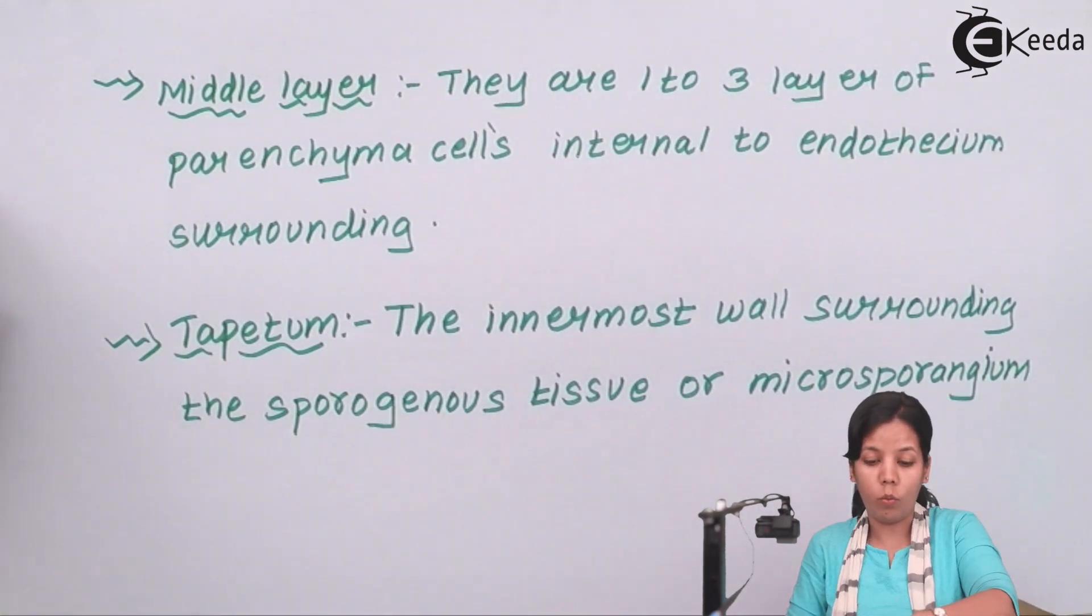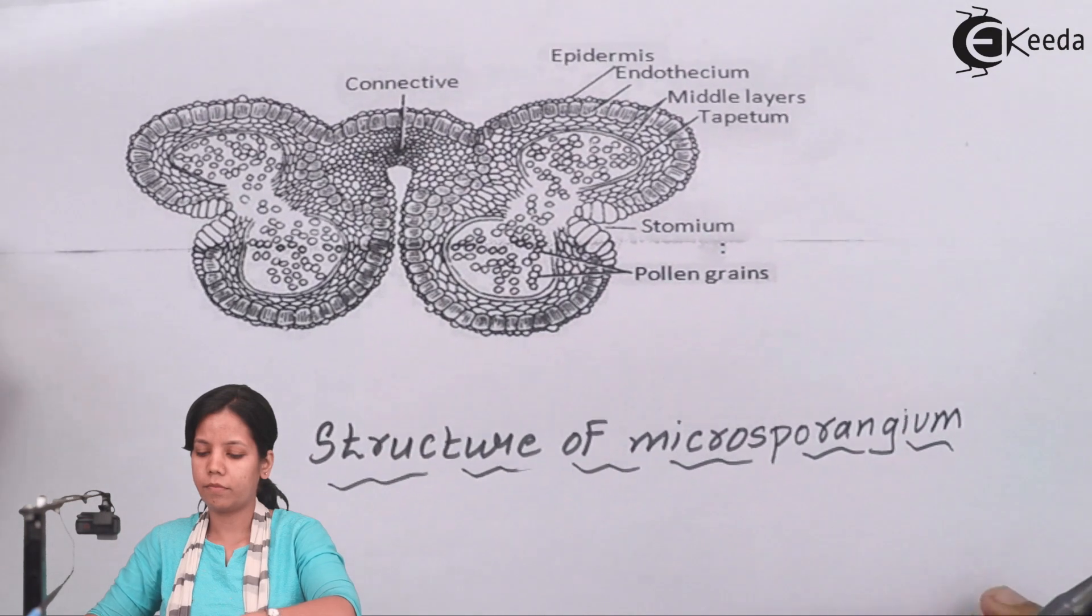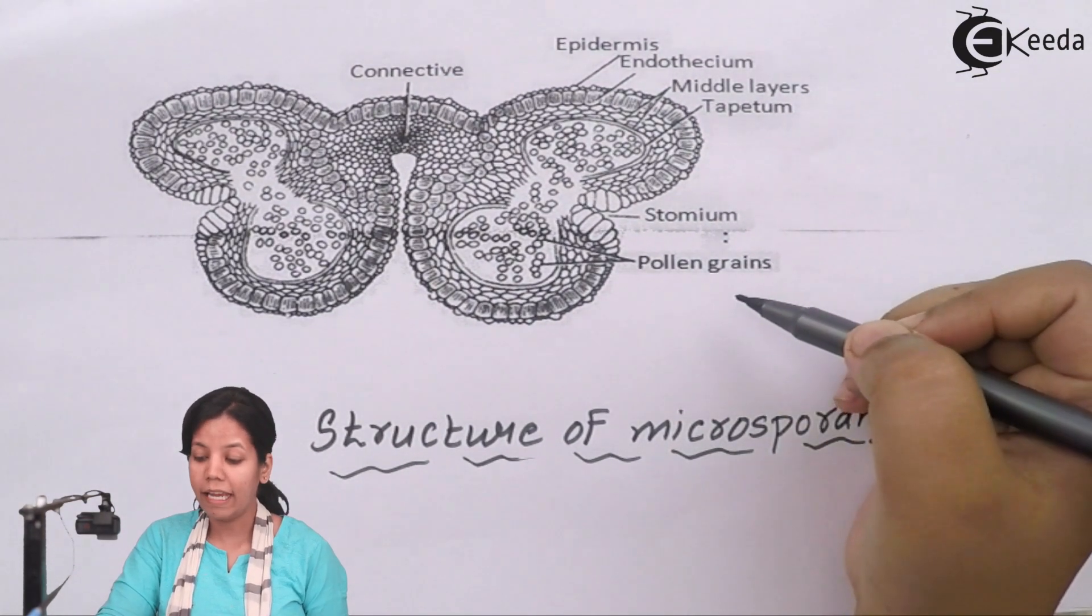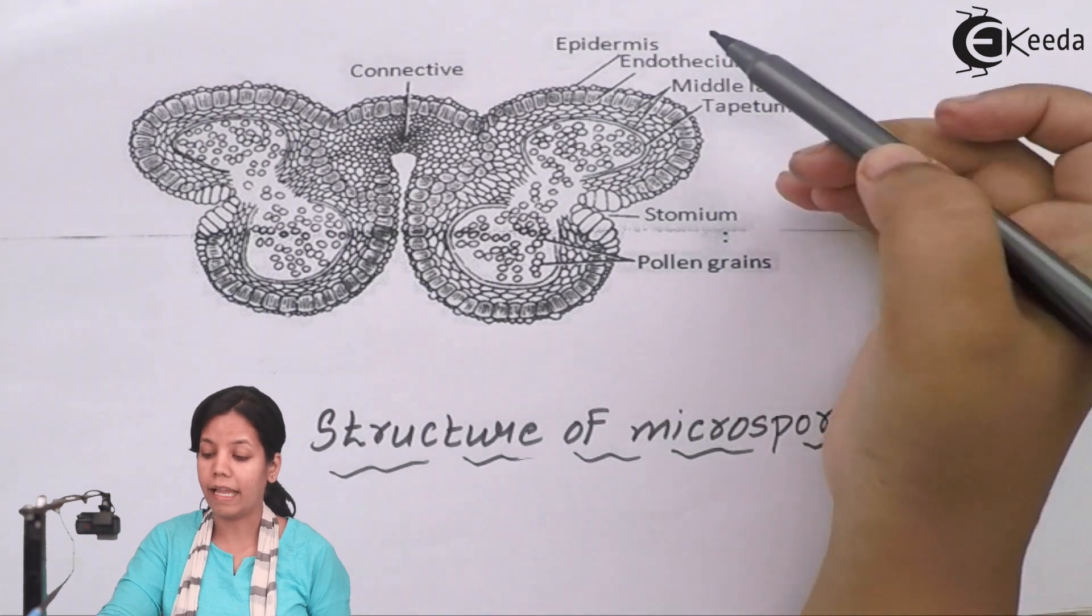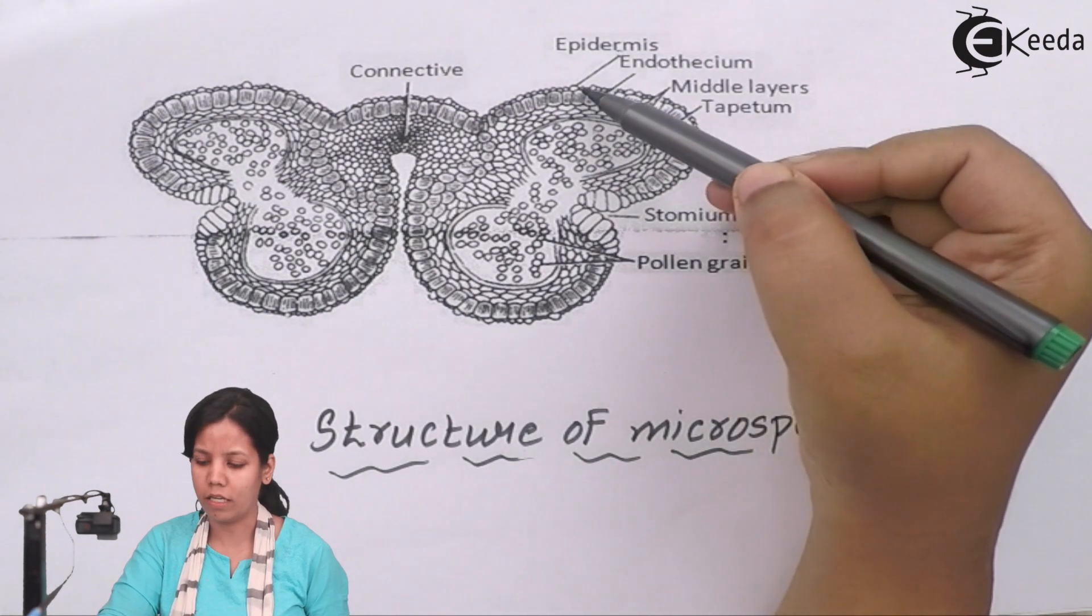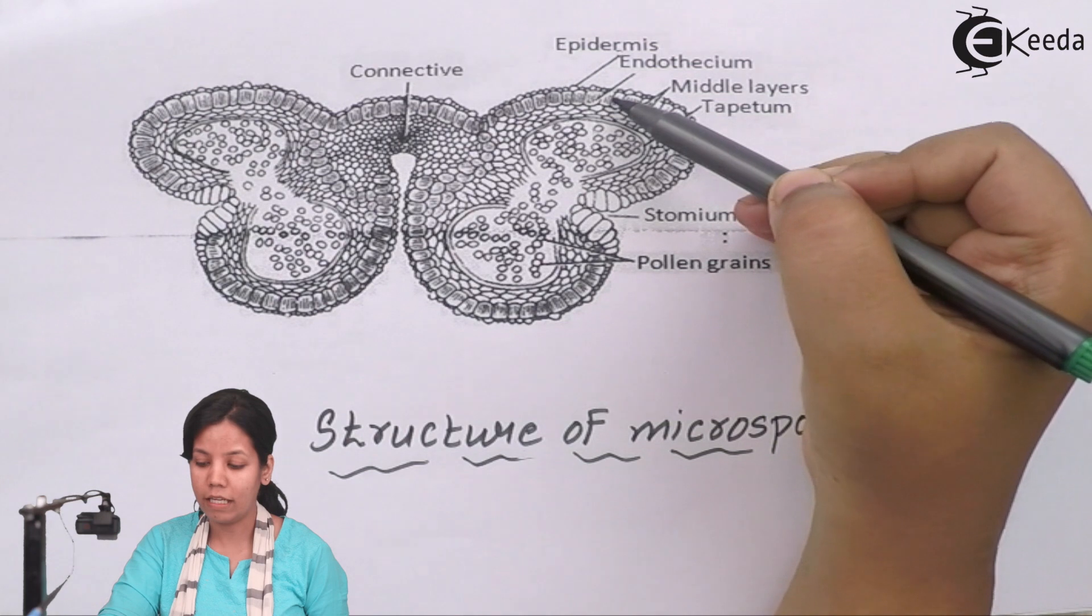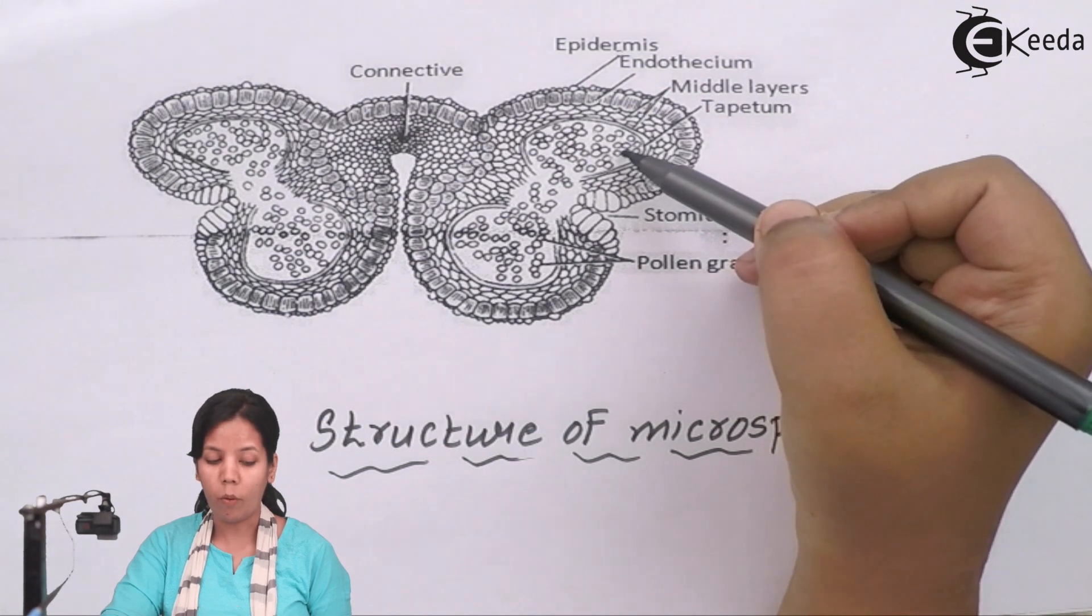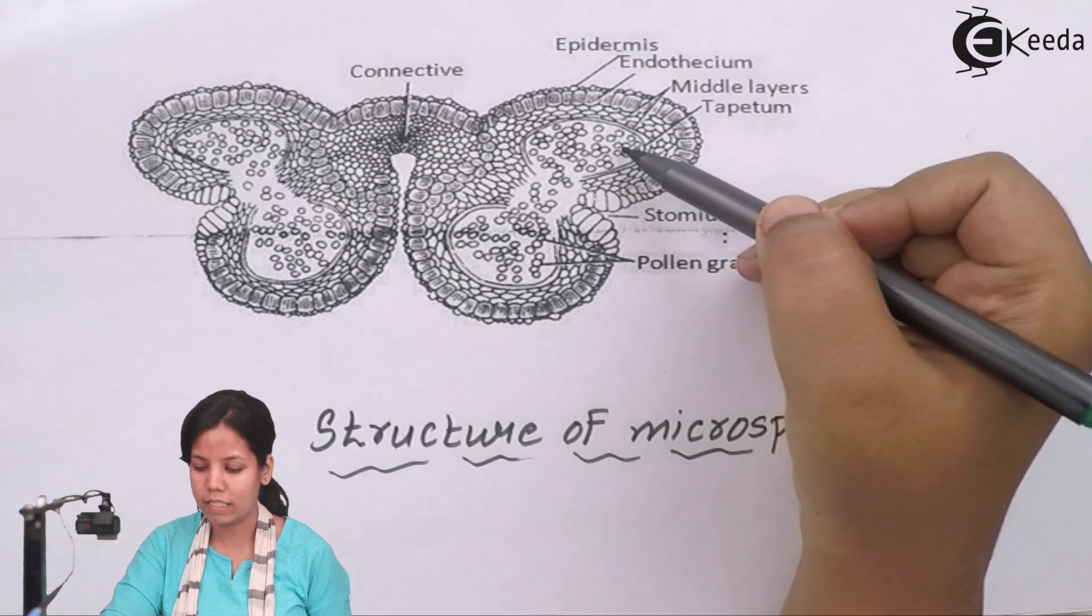Now let's see what is the diagram of microsporangium. The diagram of microsporangium consists of layers like epidermis the outermost layer, then the second layer is endothecium, then the middle layer, and tapetum which provides nourishment to the sporogenous cells.